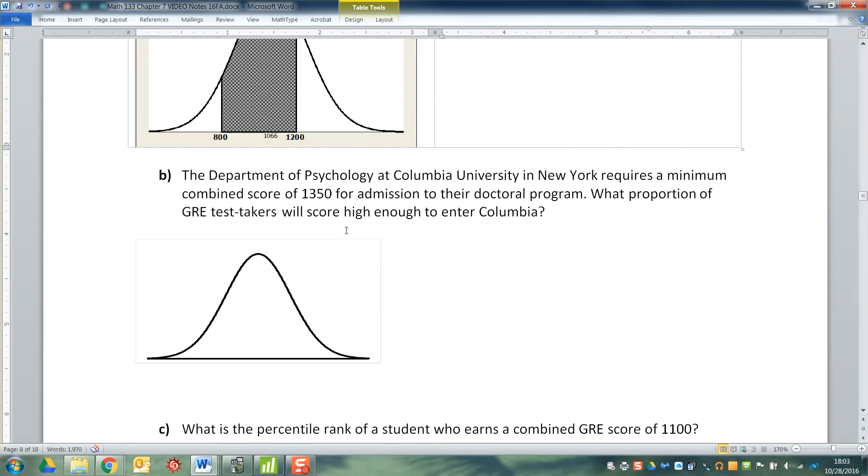All right, now Columbia University, which is located in downtown New York City, only accepts the very best of students because it's an Ivy League school. So they will not even look at you or consider your application unless you have a 1350 or higher for their doctoral program. So what proportion of GRE test takers will score high enough to enter into Columbia?